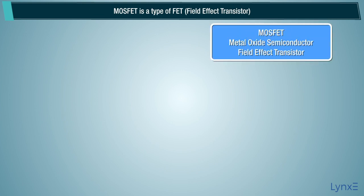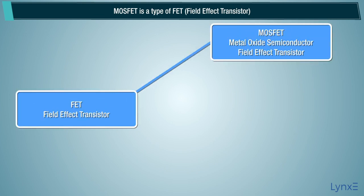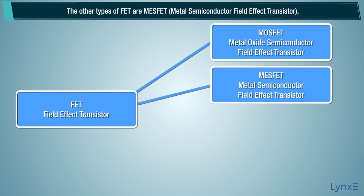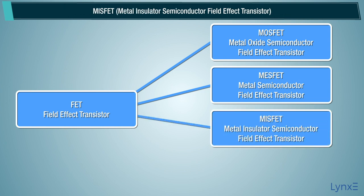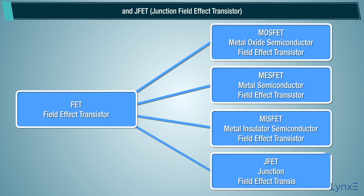MOSFET is a type of FET field effect transistor. The other types of FET are MESFET Metal Semiconductor Field Effect Transistor, MISFET Metal Insulator Semiconductor Field Effect Transistor, and JFET Junction Field Effect Transistor.